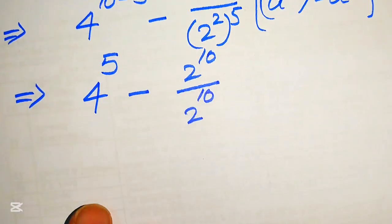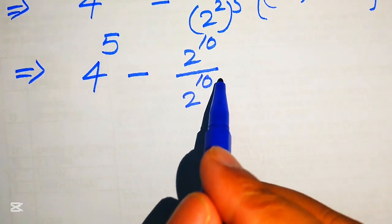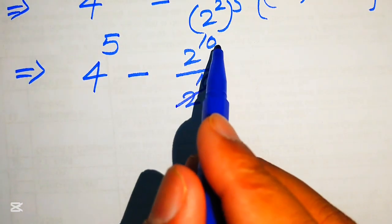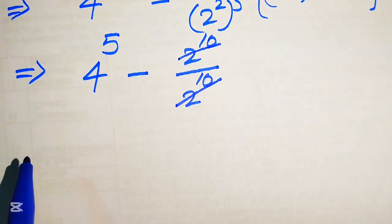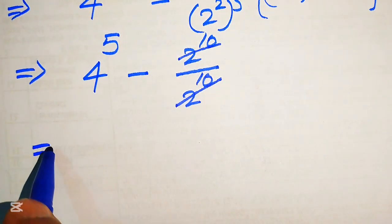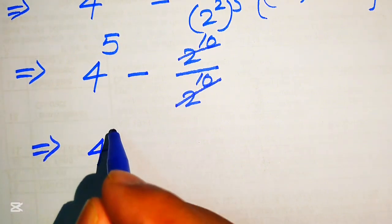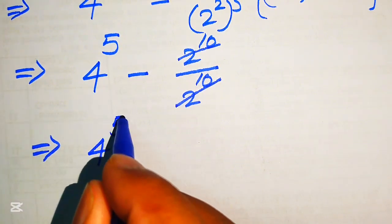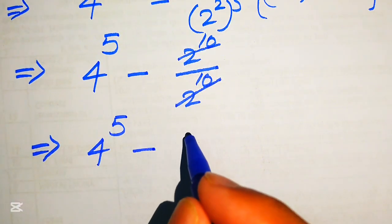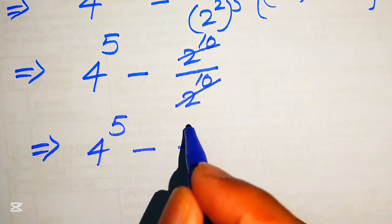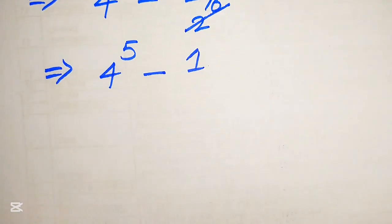Now the 2 to the power of 10 in the numerator is cancelled by the 2 to the power of 10 in the denominator, and the remaining values give us 4 to the power of 5 minus 1.